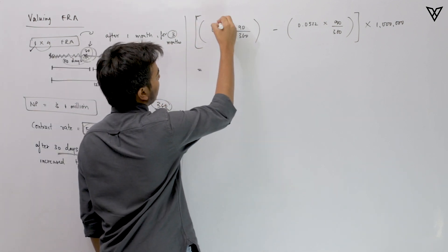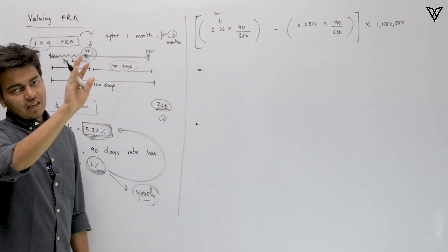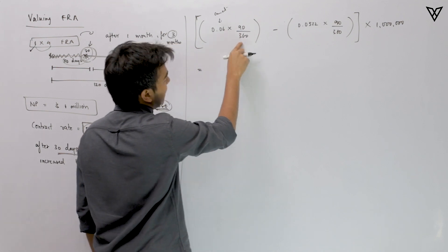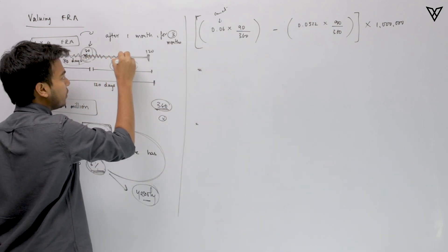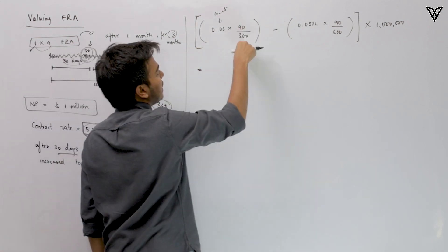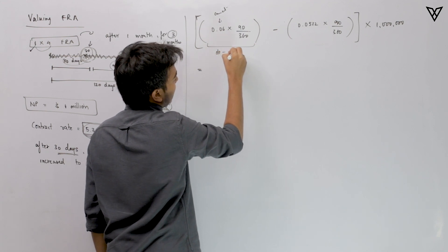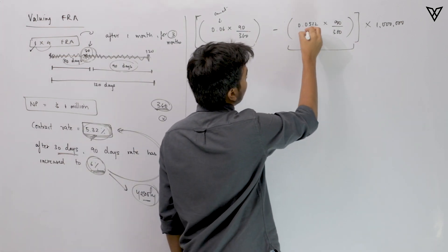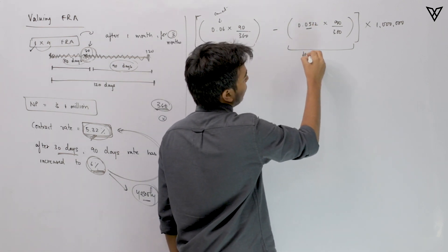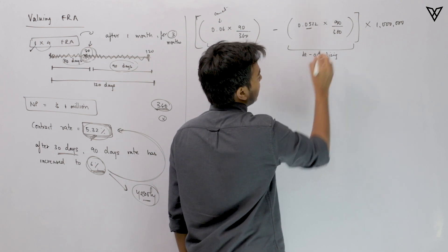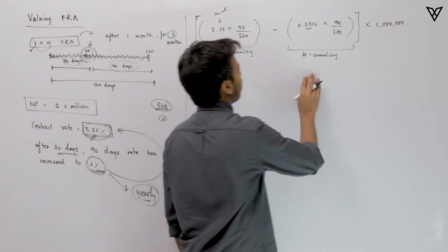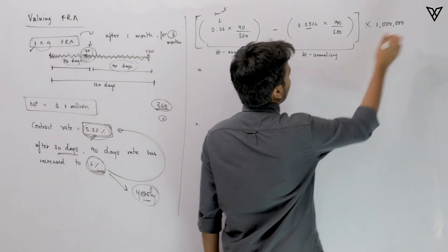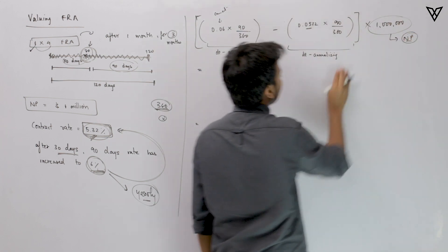The current rate is 6%. I will calculate the value for the long party. We multiply 6% by 90/360 to de-annualize it, then subtract the original rate of 5.32% also de-annualized — that is 5.32% × 90/360. So: (0.06 − 0.0532) × (90/360) = 0.0017. Multiplying by the notional principal of 1 million dollars gives $1,700.